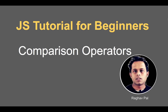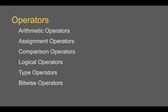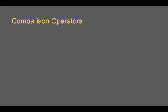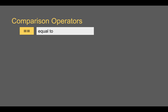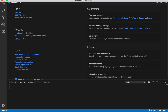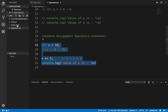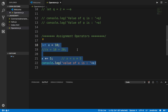Hello and welcome, I'm Raghav. Today we are going to learn about comparison or relational operators in JavaScript. We have seen different types of operators and learned about arithmetic and assignment operators in the last session. Today we are going to discuss comparison operators. I'll go to my Visual Studio Code and open the operator.js file we created earlier, and comment out the assignment operators section.